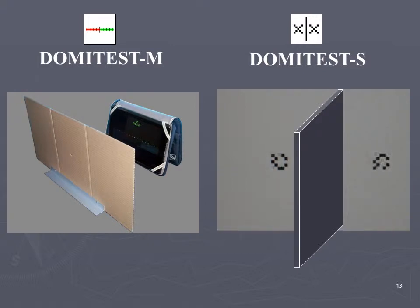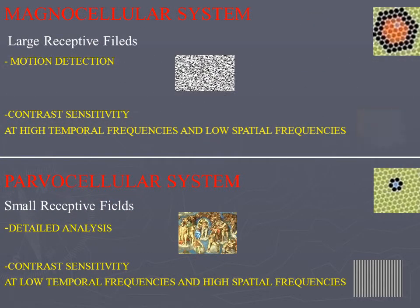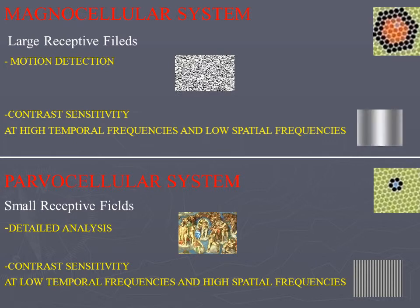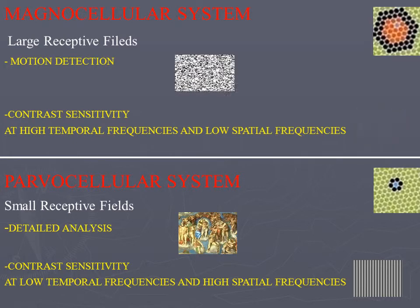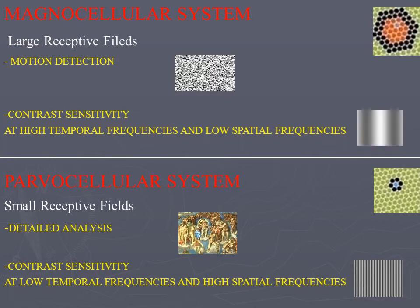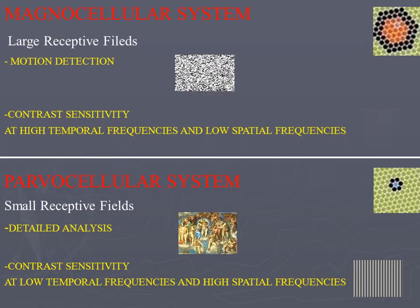The advanced solution is the Domitest M and the Domitest S. A second stream of research has highlighted in a subgroup of dyslexics subtle visual-perceptive alterations involving one of the two visual pathways, the magnocellular system. The magnocellular system is in charge of motion perception and of contrast sensitivity at high temporal frequencies and low spatial frequencies.